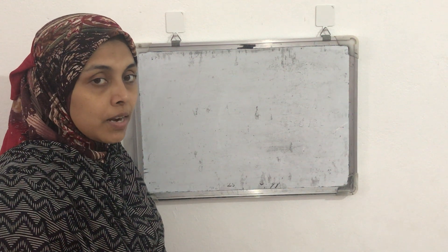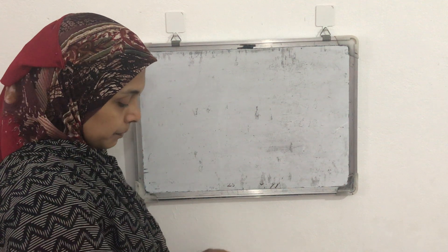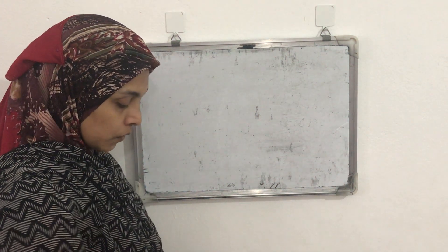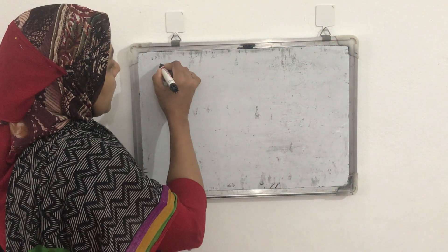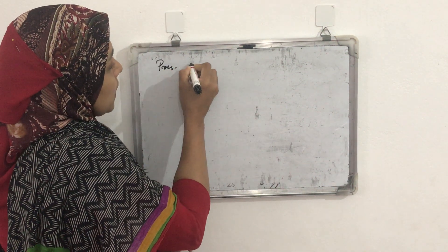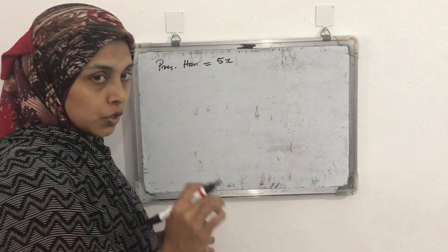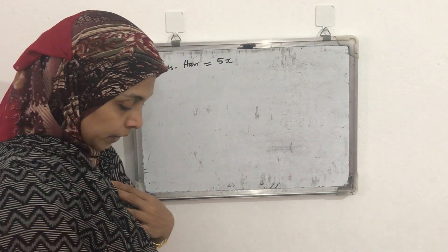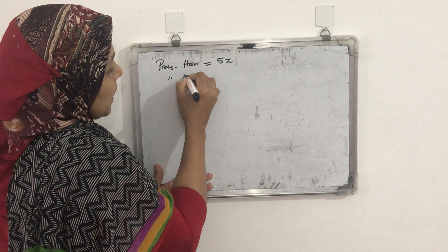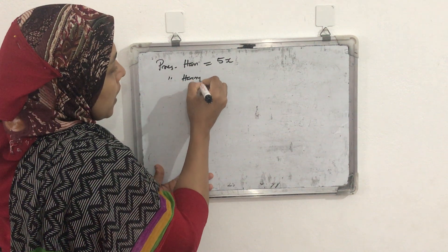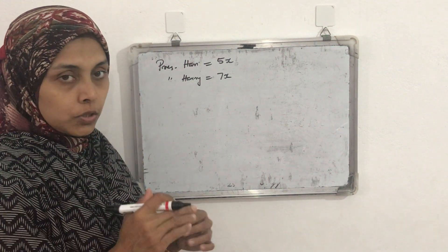If the ratio is given, how we can take their ages? We want to find out their present age. Let the present age of Hari be 5x, because the ratio is given as 5 is to 7. And the present age of the second Hari we can take as 7x, because the ratio is given 5 is to 7.